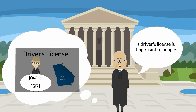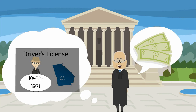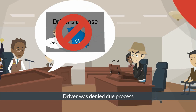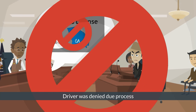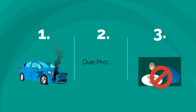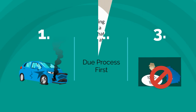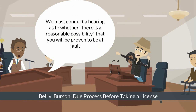The case went to the Supreme Court, which noted that a driver's license is important to a person's life and to his livelihood. So by suspending the driver's license without a hearing, the state denied the driver due process. The Supreme Court concluded that before the state could take away the driver's license, the state must have a hearing as to whether there was a reasonable possibility that the driver would ultimately be found at fault for the accident.